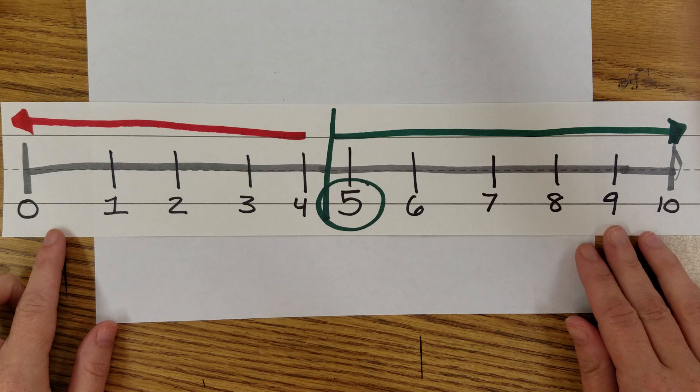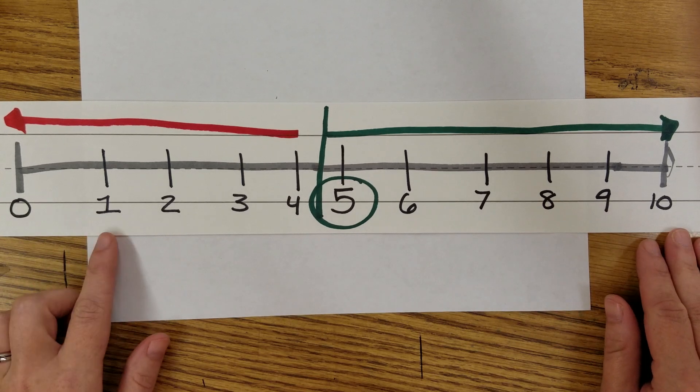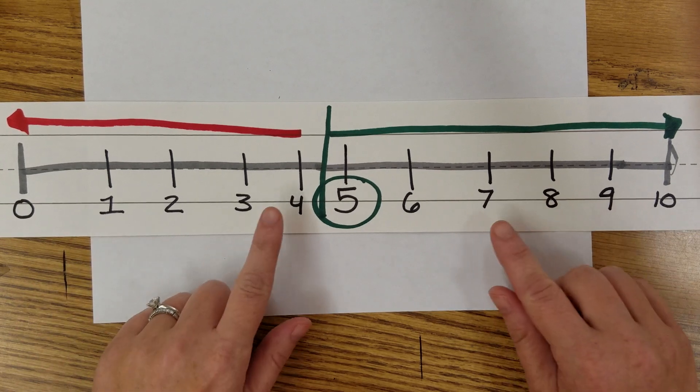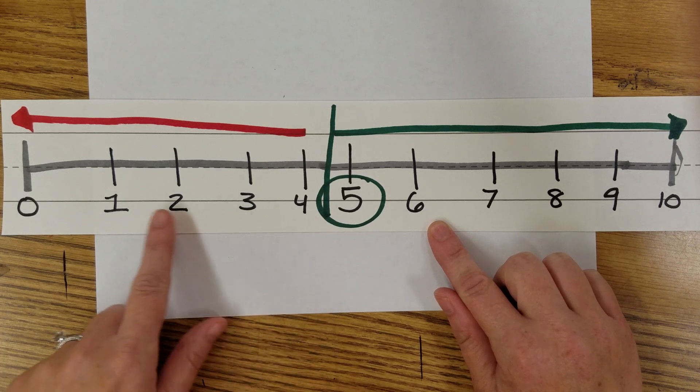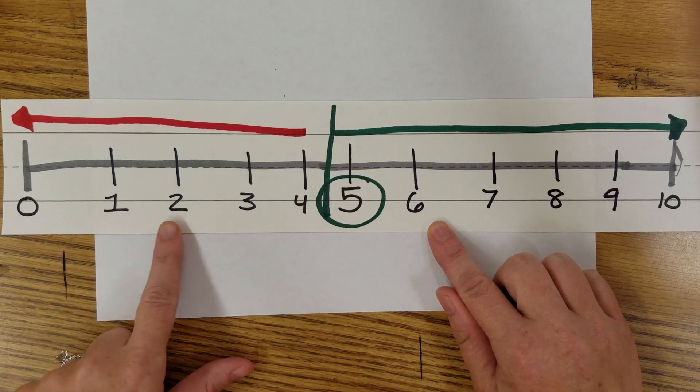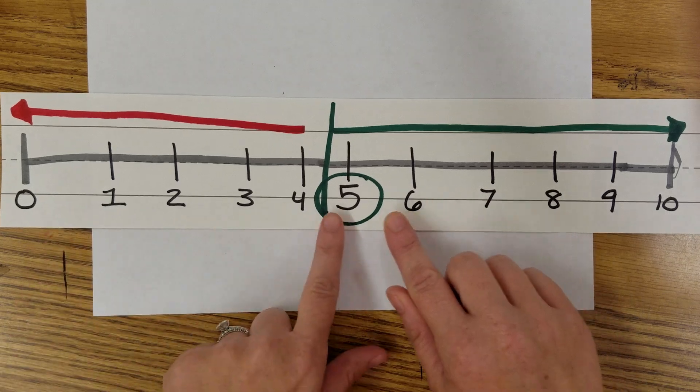Okay, so the first thing to remember when we're practicing rounding to the nearest ten is remembering which numbers are the smaller numbers that tell you to stay where you're at. So zero, one, two, three, and four are going to tell you to stay.